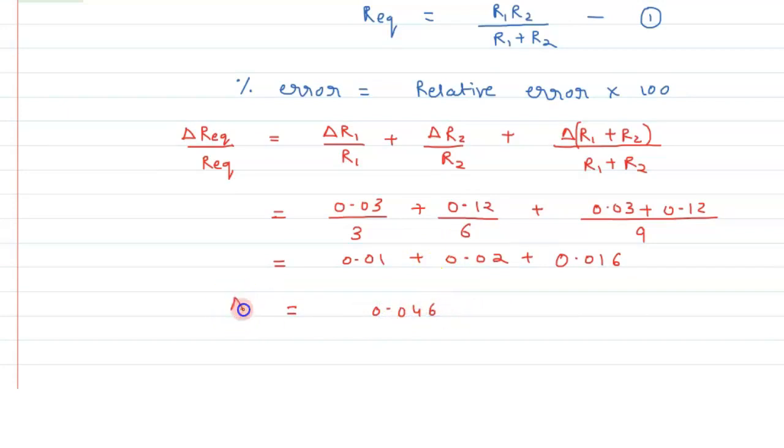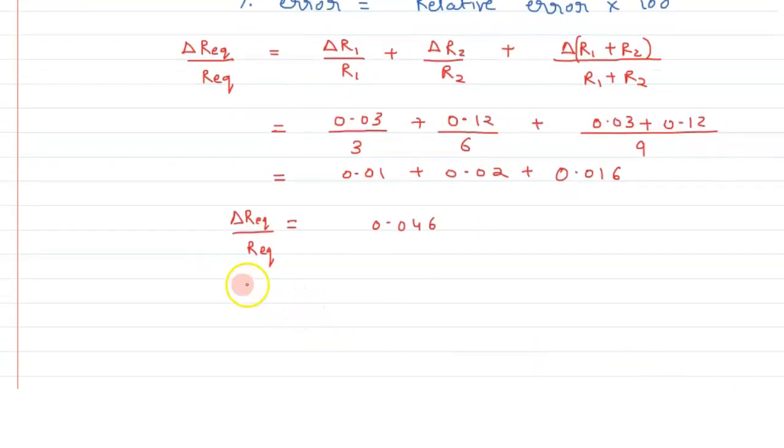So this is the relative error we have calculated. Now just we have to multiply it with 100 and we can get the value of percentage error. Therefore percentage error can be written as delta R_eq upon R_eq into 100, and that gives us the value as 4.6%.